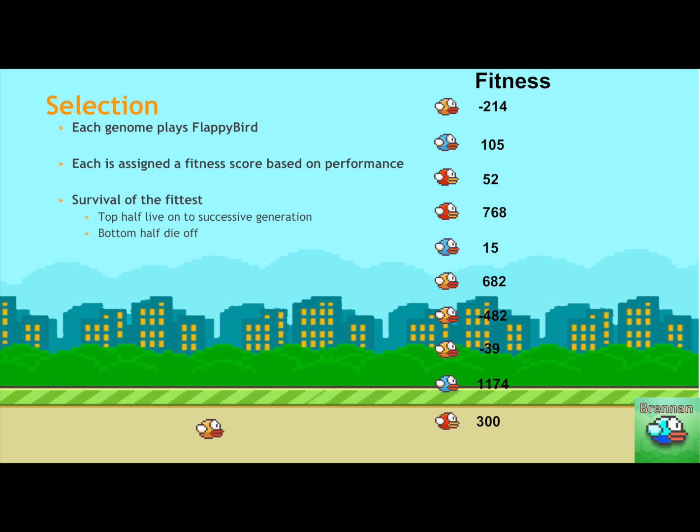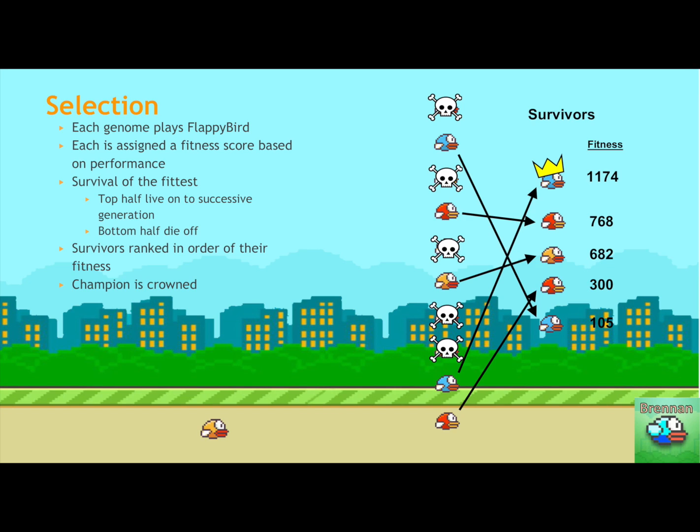So the first part is selection. So we have each of our organisms or birds go and play the game. They score some fitness function representing how well they did relative to one another. And again, survival of the fittest. So the top half will live on and the bottom half will die off. The ones that first we rank all the survivors in order of their fitness, and then technically a champion is proud.